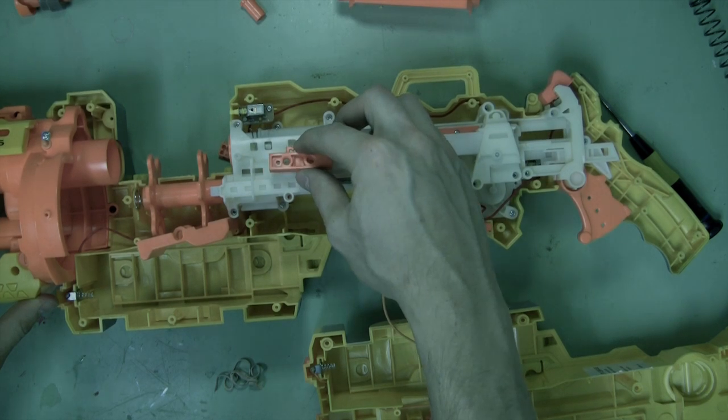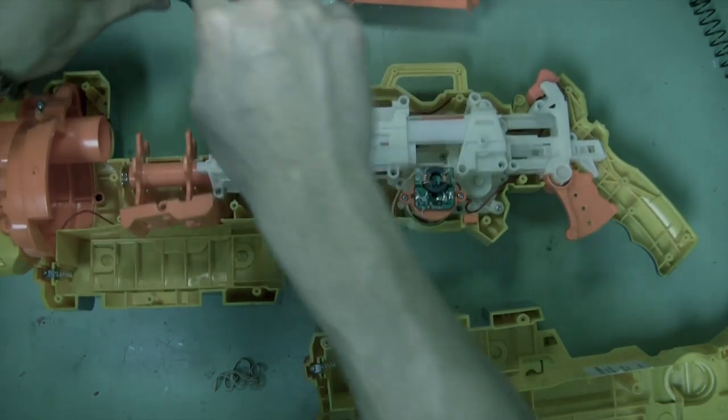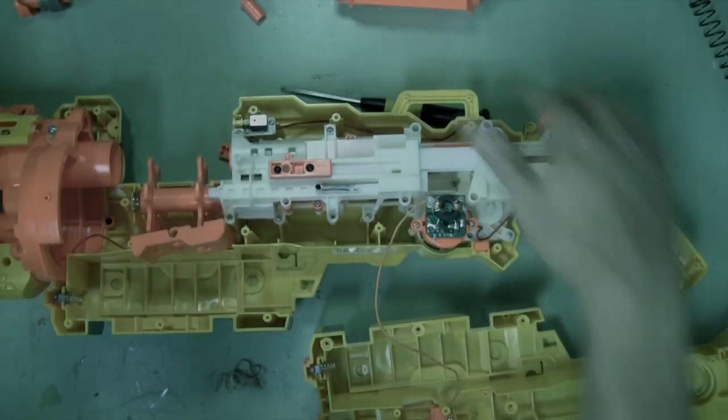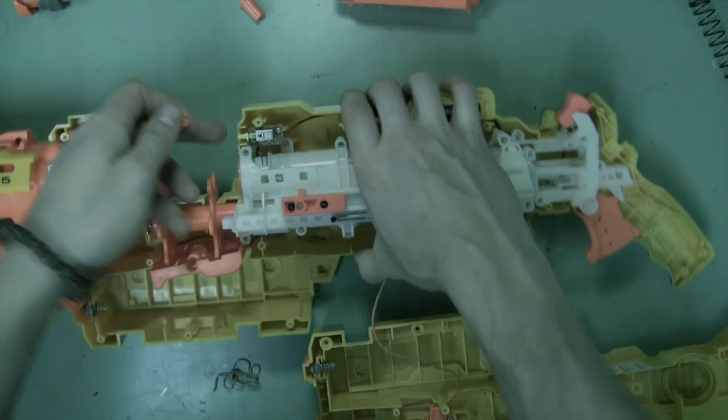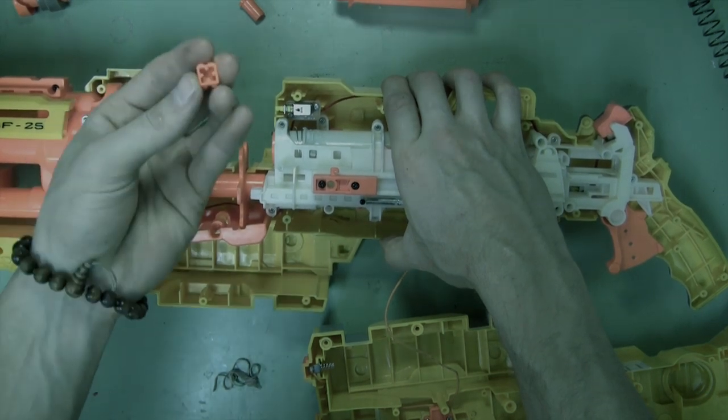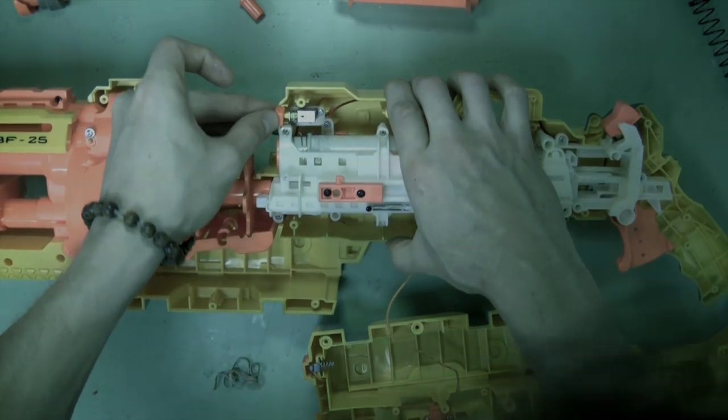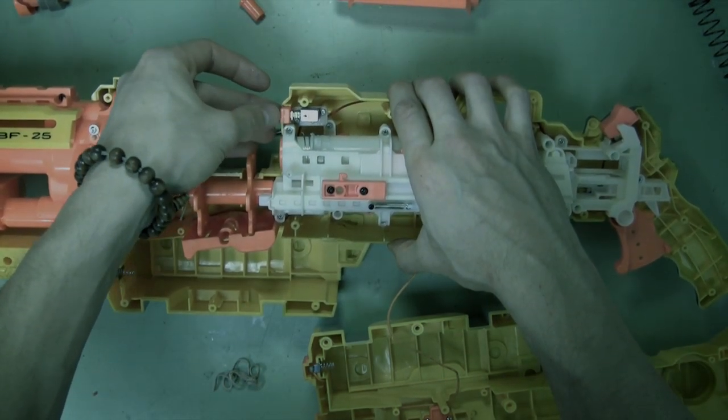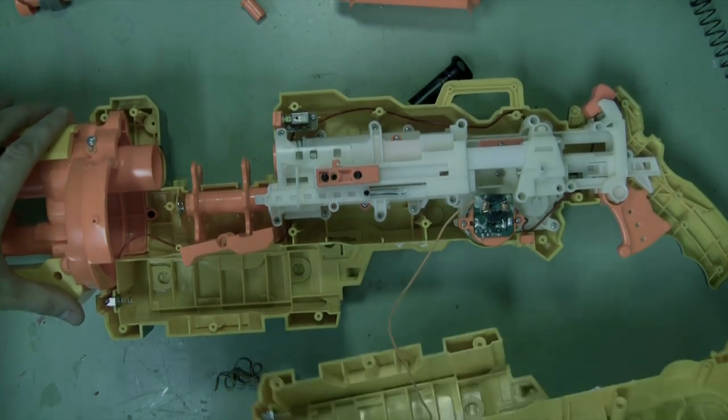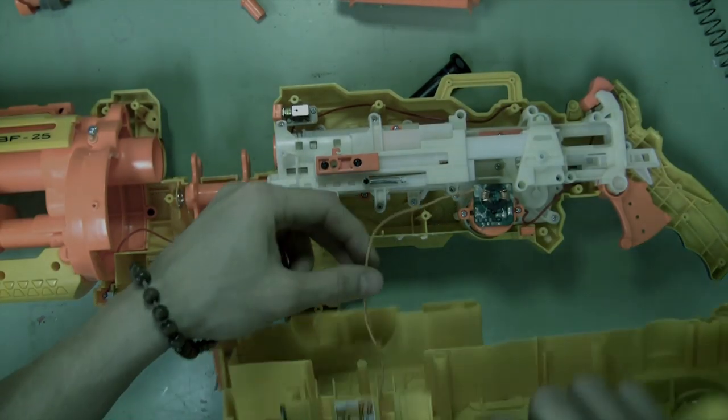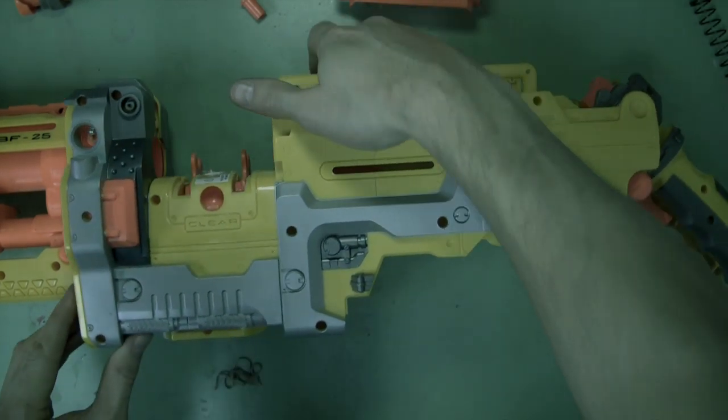First up, this piece we removed first. And don't forget this switch cover. That goes right here. Because odds are it will fall out once you start taking your blaster apart. Alright. Now watch out for this orange wire. Make sure that it's not in the way of anything. And fit the shell back together.